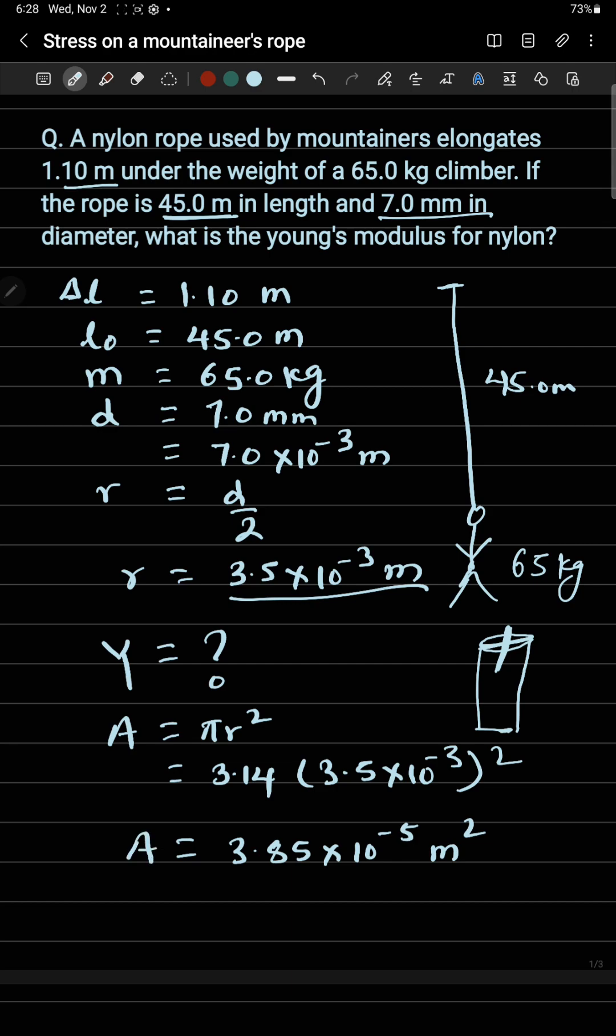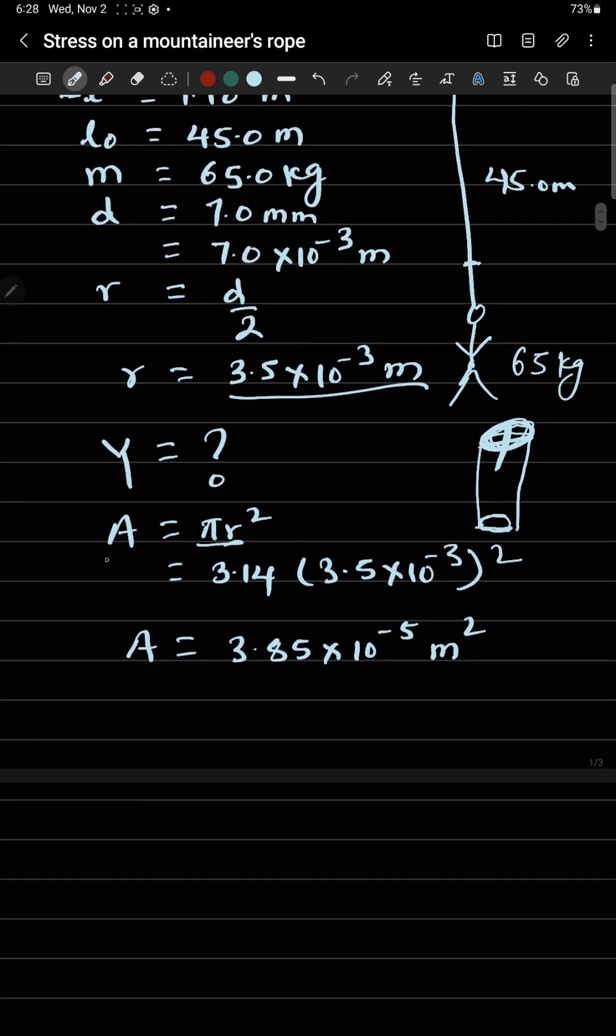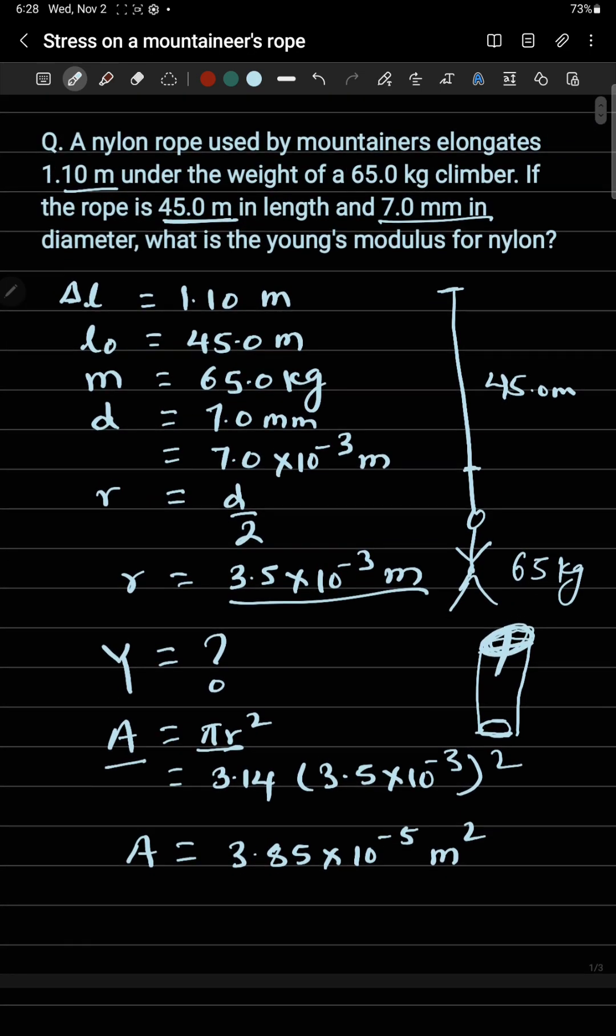This is giving me 3.85 times 10 to the power negative 5 meter squared. This is the area, the cross-sectional area. I need the area of cross-section of this wire. The cross-sectional area is the area of this circular portion, so the formula is pi r squared.